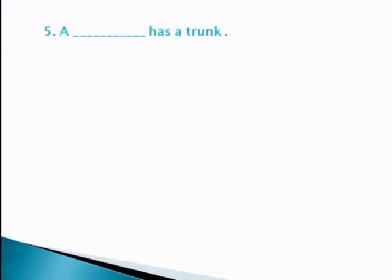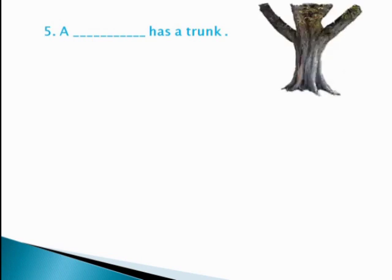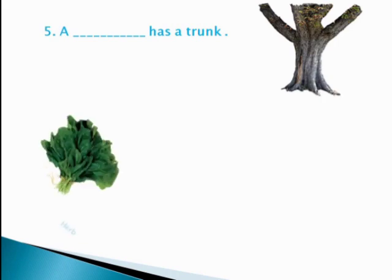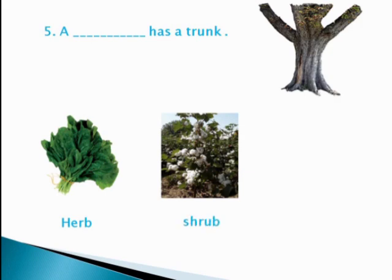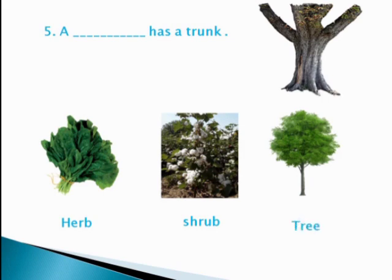In blank number 5, we have: a dash has a trunk. Do you remember what is a trunk? Look at this picture — it is a trunk, the stem of a tree. Here we have the options: number 1, herb — is there any trunk? No. A cotton plant — is there any trunk? No. And is there any trunk that is similar to a tree's trunk? Yes. So the answer would be: a tree.